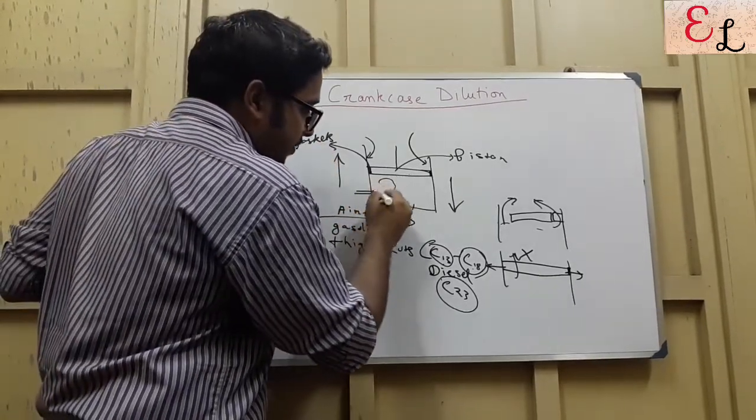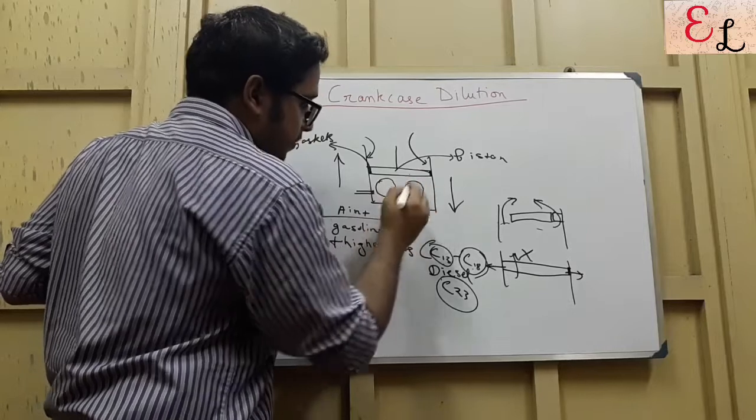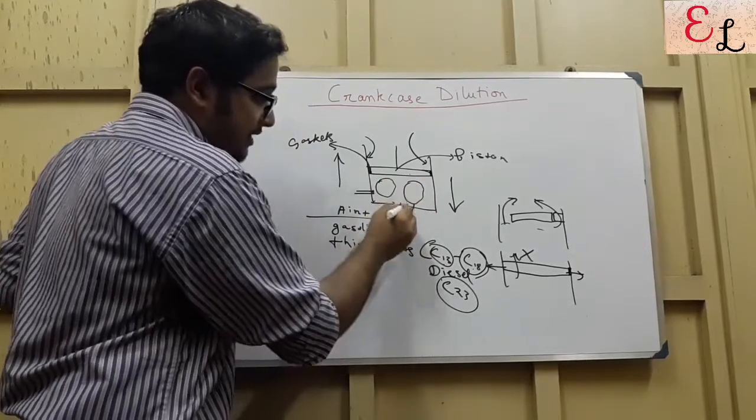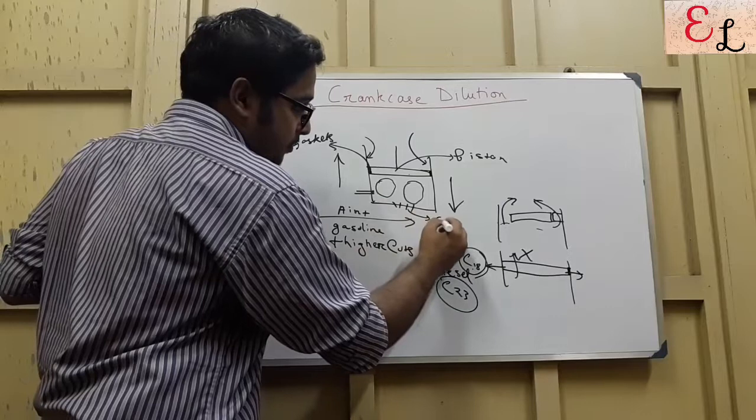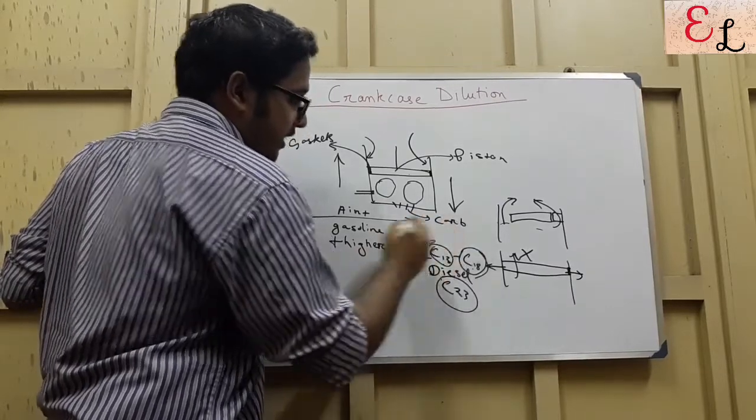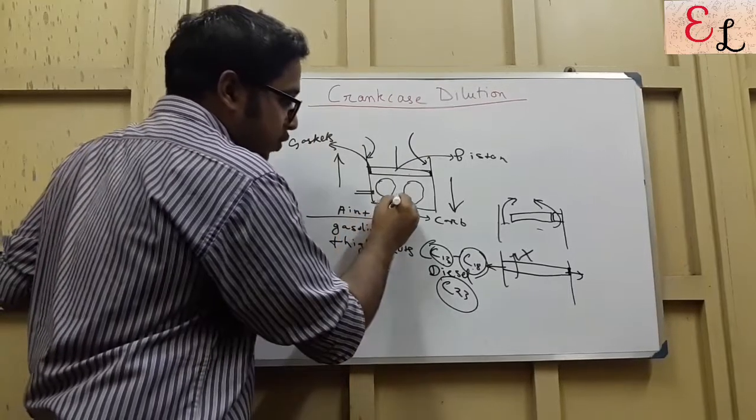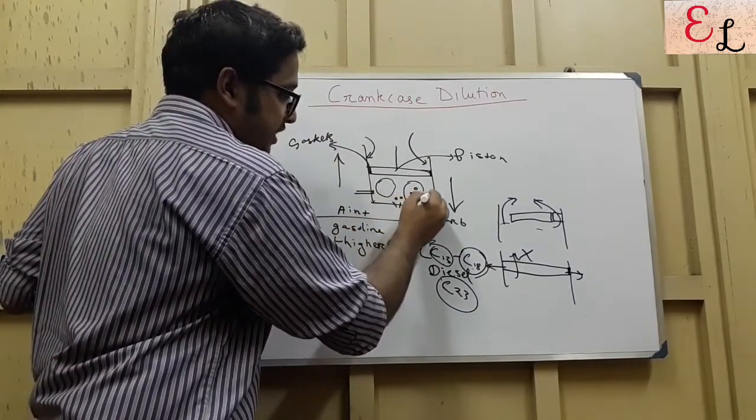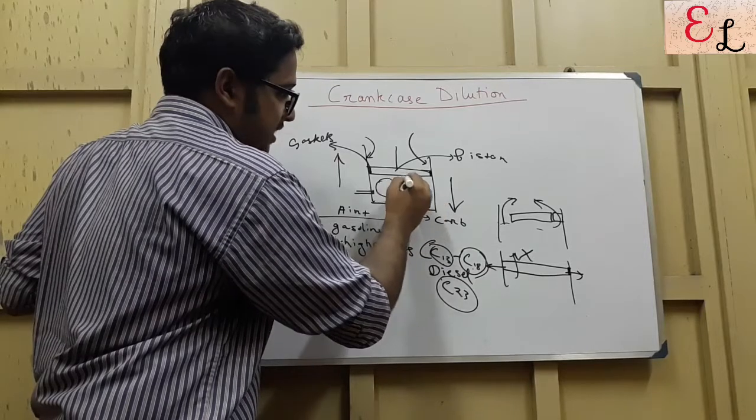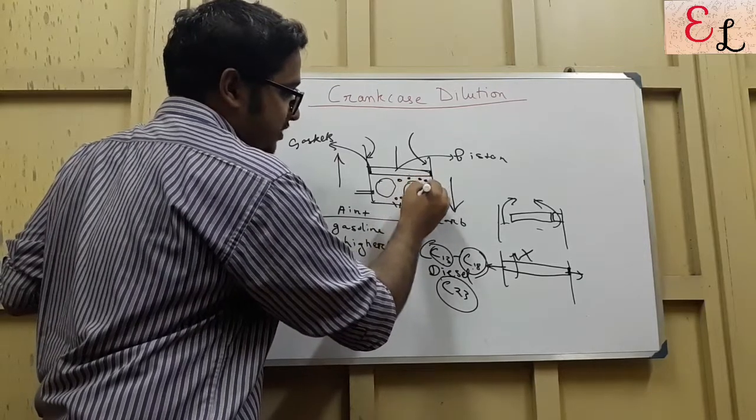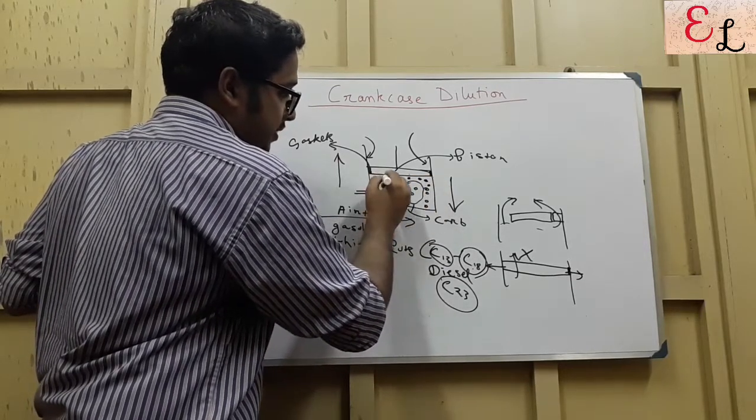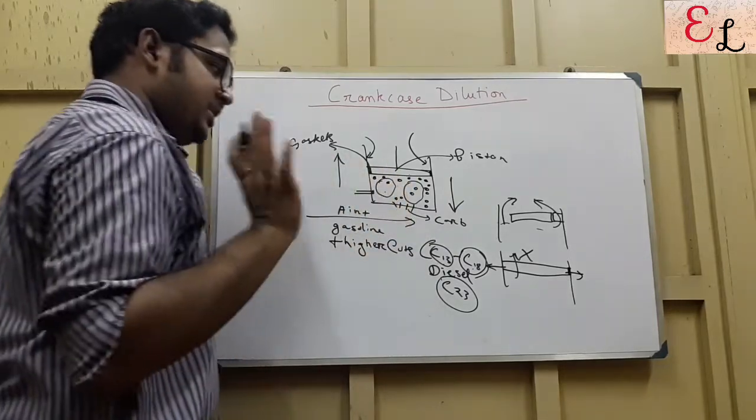So, gasoline is present as vapor mixed with air, but along with that, this is the carburetor. The carburetor sends the gasoline as vapors, and as we know, the diesel and the kerosene if mixed by any means, remain as liquid droplets atomized within. They are not vapors, but gasoline is vapor.